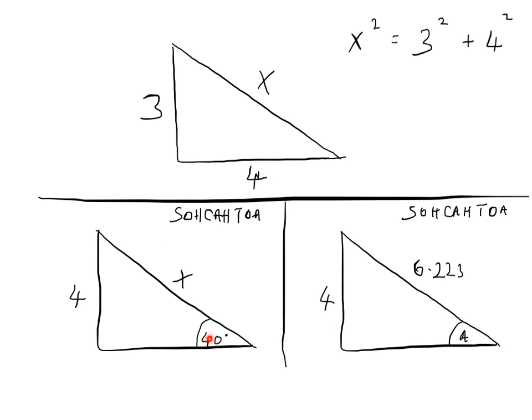If you want to find cos of 40 degrees, that's the adjacent over the hypotenuse. And the tan of 40 degrees would be the opposite over the adjacent. If you find it difficult to remember what sine, cos, and tan are equal to, one mnemonic I prefer to use is SOHCAHTOA. SOH stands for sine equals opposite over hypotenuse. CAH stands for cos equals adjacent over hypotenuse. TOA stands for tan equals opposite over adjacent.